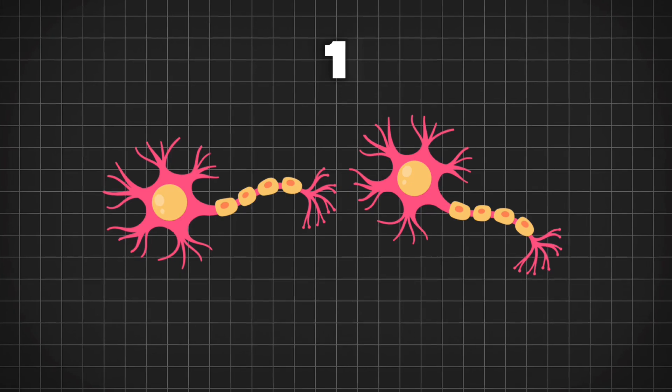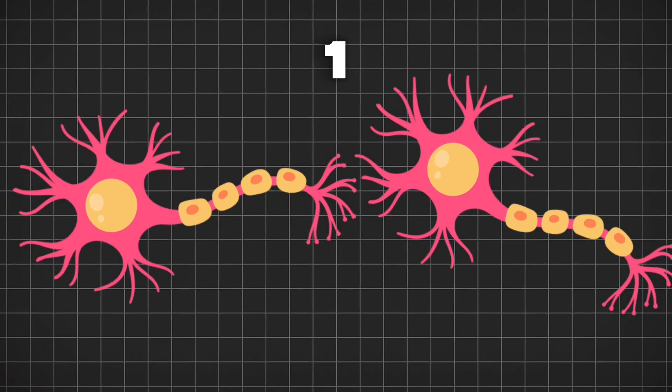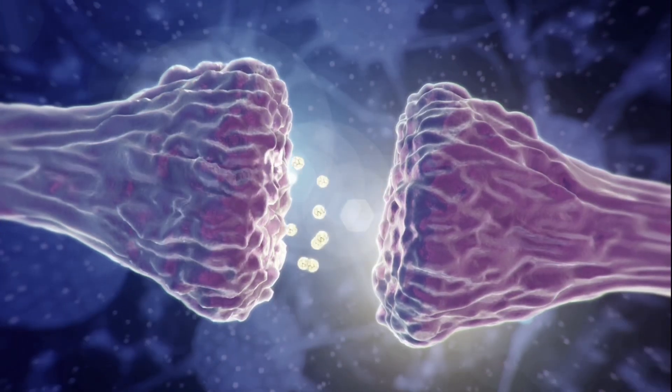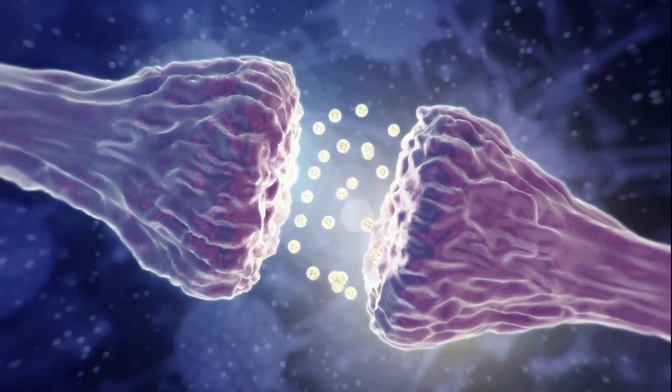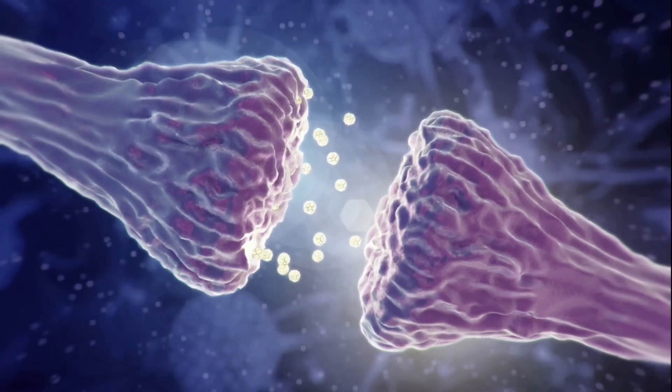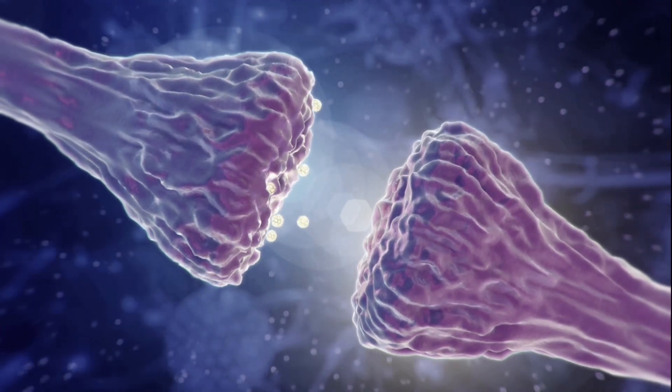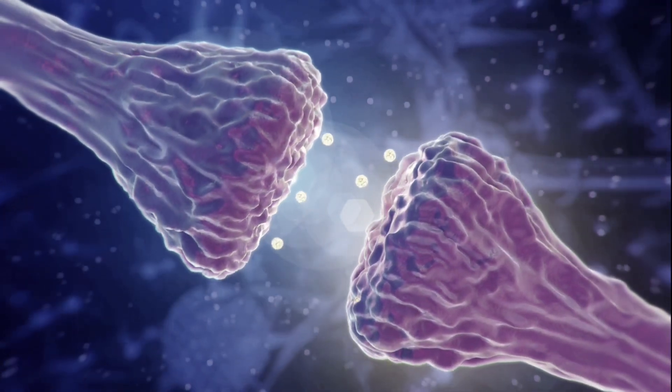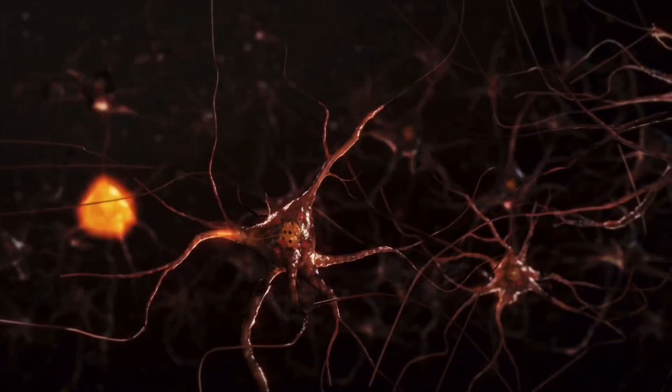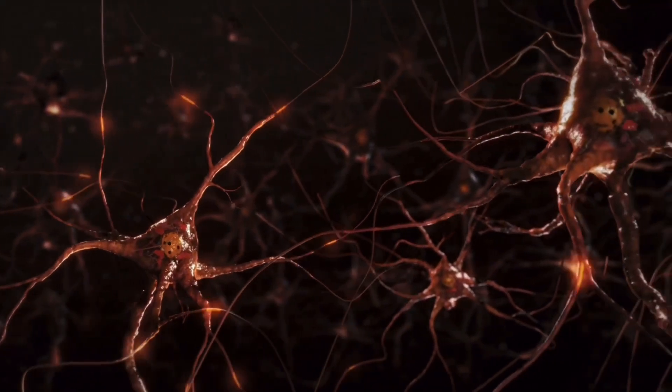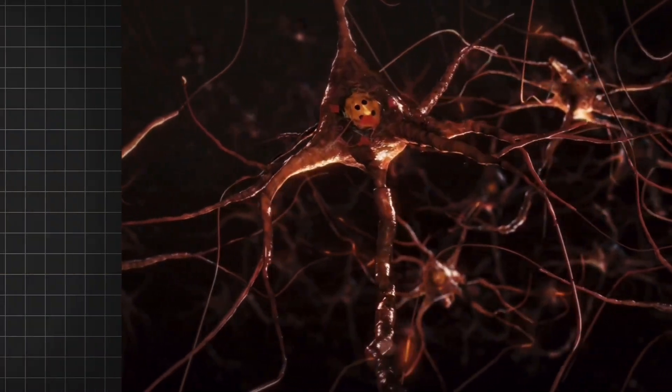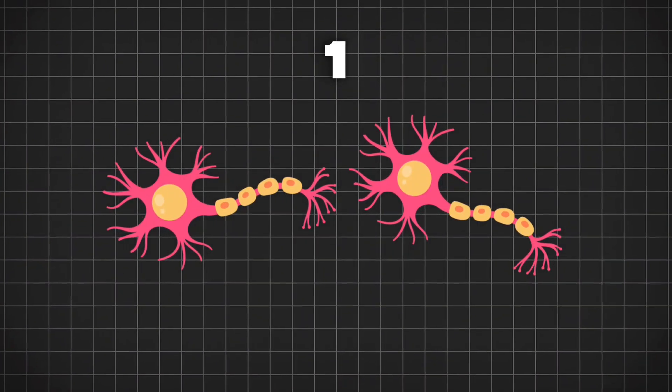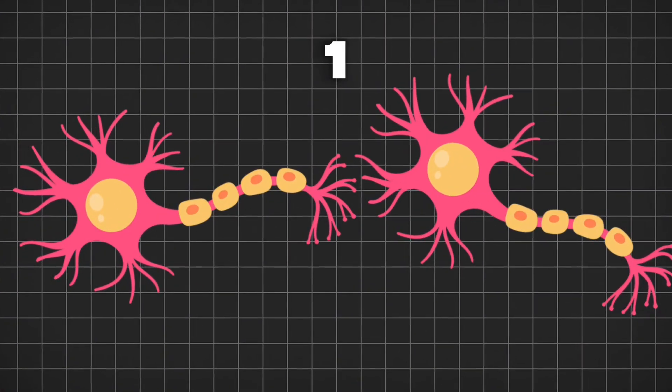One is the strengthening of certain connections, what we call synaptic connections. Synapses are the location between neurons where they communicate with one another. It's actually a gap between the neurons. And within that gap, chemicals are passed across that gap that allow one neuron to activate other neurons or many neurons to activate many other neurons or to inhibit the activity of other neurons. So one form of neuroplasticity is the strengthening of connections between neurons.